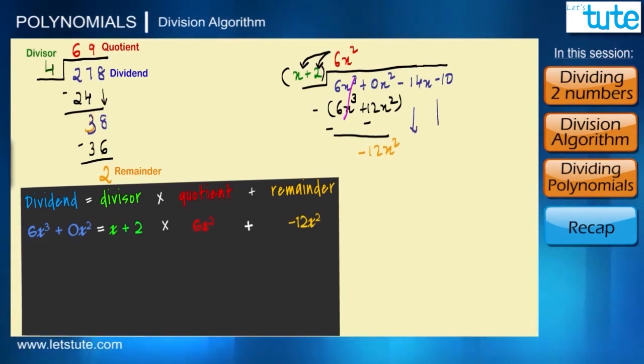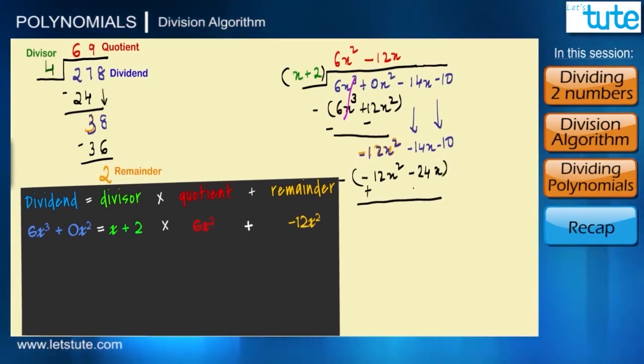So now we can carry down the remaining terms -14x and -10 as it is. So now we have a new dividend that is -12x² - 14x - 10. So again what times x will give us -12x²? That is -12x. And then we will multiply -12x by 2 so we get a -24x. Again we will subtract the entire term so the signs will change. So minus becomes plus. So we are left with 10x - 10 which is our remainder. Can we divide further? Yes we can multiply x into something to get 10x, right?